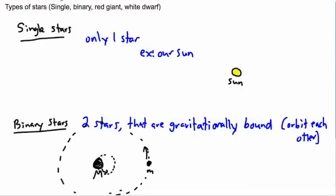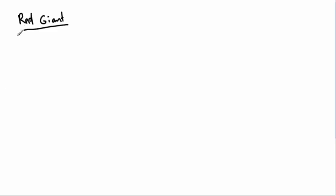We've been talking about different types of stars, and we've covered single stars, which are a little bit boring in this case, binary stars, and now we can talk about red giants and white dwarfs. So let's talk quickly about red giants. What are those?